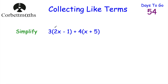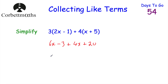Next, simplify 3(2x − 1) + 4(x + 5). First expand the brackets. 3 × 2x = 6x, 3 × 1 = 3, so the first bracket gives 6x − 3. Then 4 × x = 4x, 4 × 5 = 20, so the second bracket gives + 4x + 20. Now collect like terms: 6x + 4x = 10x, and −3 + 20 = 17. The answer is 10x + 17.